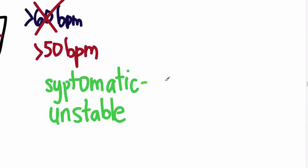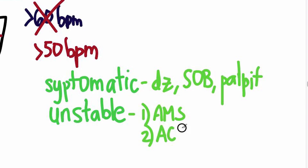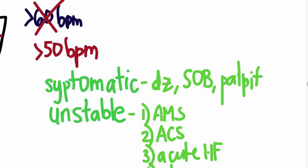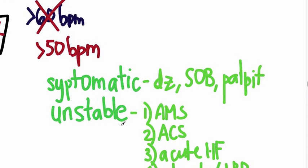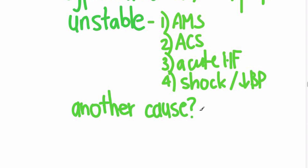Symptomatic patients might be dizzy and lightheaded, short of breath, or have palpitations. Unstable patients are defined by altered mental status, chest pain — such as acute coronary syndrome or unstable angina — acute heart failure, shock, or hypotension. These symptomatic patients are not in imminent danger, whereas unstable patients are. We also want to see if there's something else causing the bradycardia, such as hypoxia or sepsis, in which case you treat those processes first.